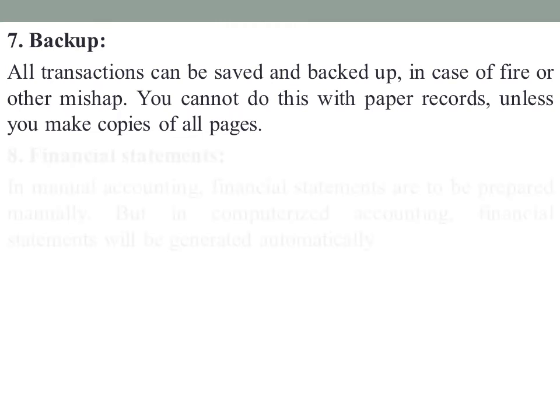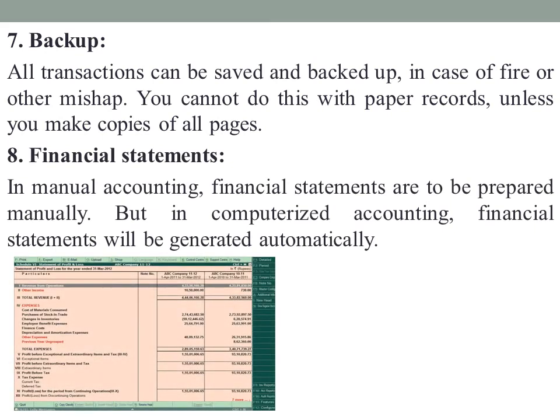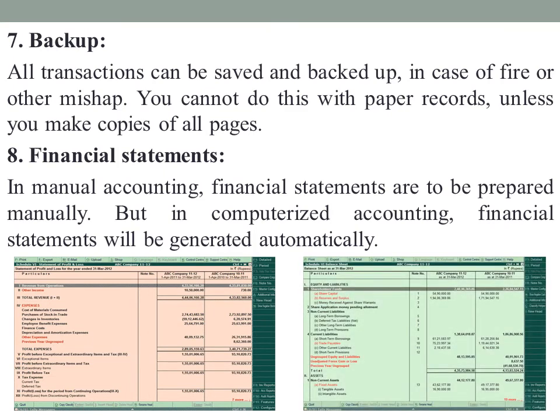The last difference is financial statements. In manual accounting, financial statements are to be prepared manually. But in computerized accounting, financial statements are generated automatically by the accounting software — trial balance and all financial statements are prepared and displayed automatically on the main home screen.